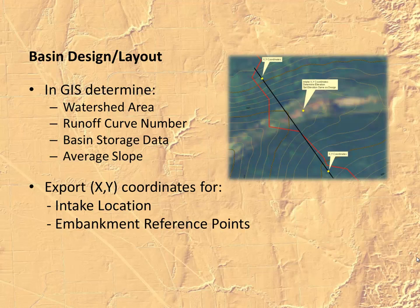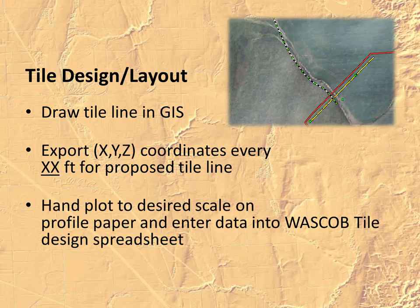Let's cover the basic methodology. We use ArcGIS to determine watershed area, derive a runoff curve number, come up with basin stage storage data, and derive average slope. Then we export XY coordinates for our intake location and embankment reference points in the field. We also take care of tile design and layout by drawing tile lines in ArcGIS, exporting XY and Z coordinates every X number of feet for a proposed tile line, hand-plotting to desired scale on profile paper, and entering data into the WASCOB design spreadsheet to finish tile design considerations.